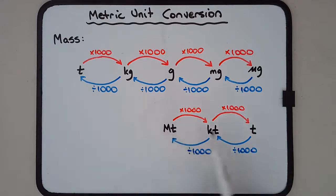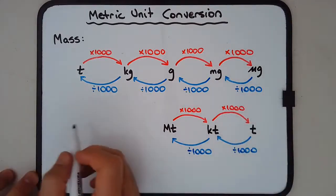So likewise, to go from megaton to kiloton, you multiply by a thousand. Kiloton to ton by a thousand. Let's have a look at an example.